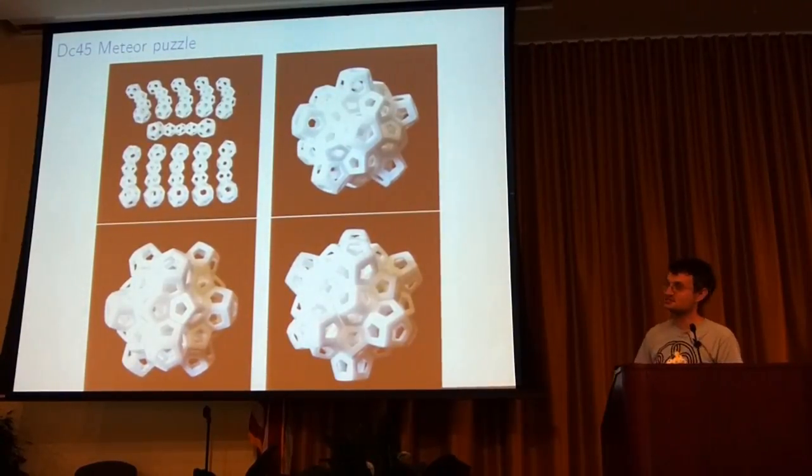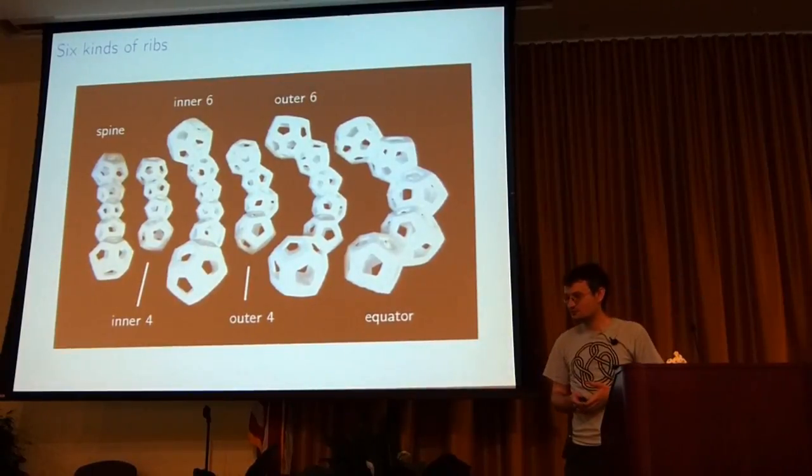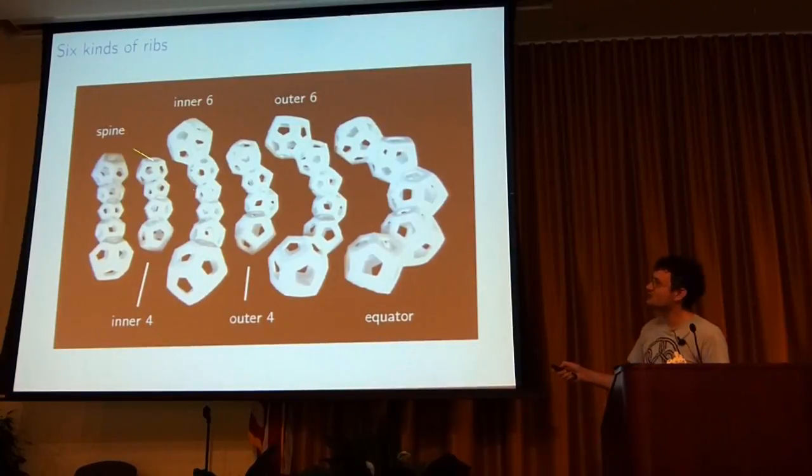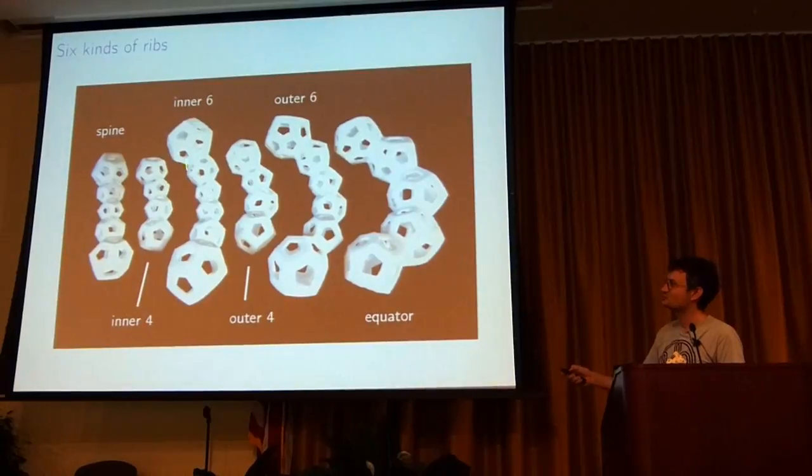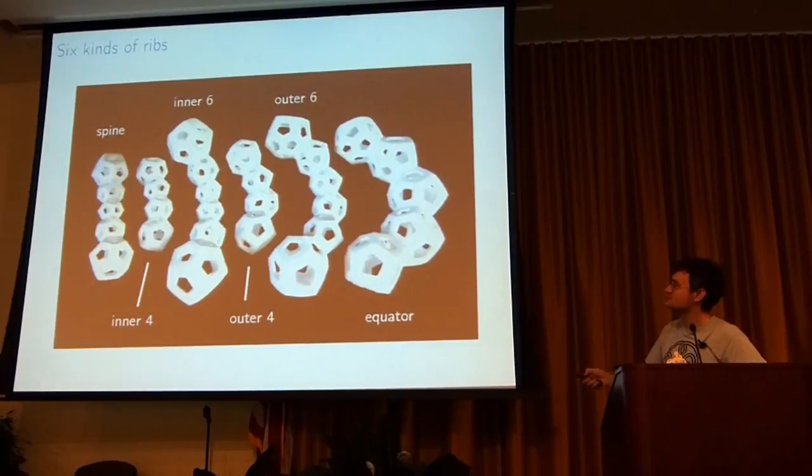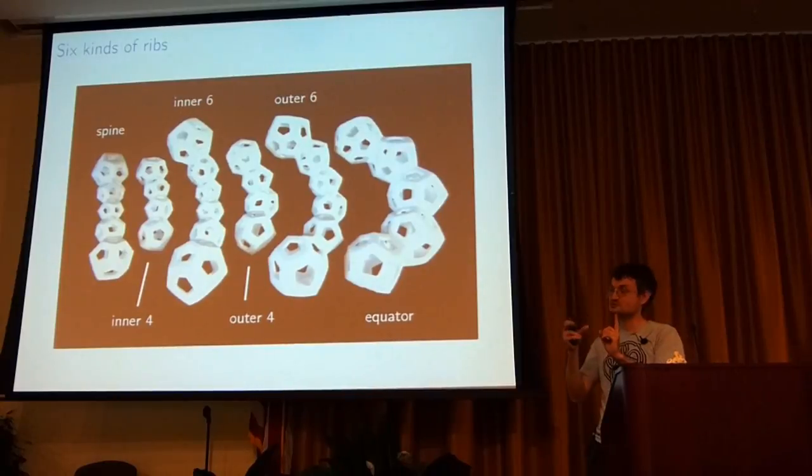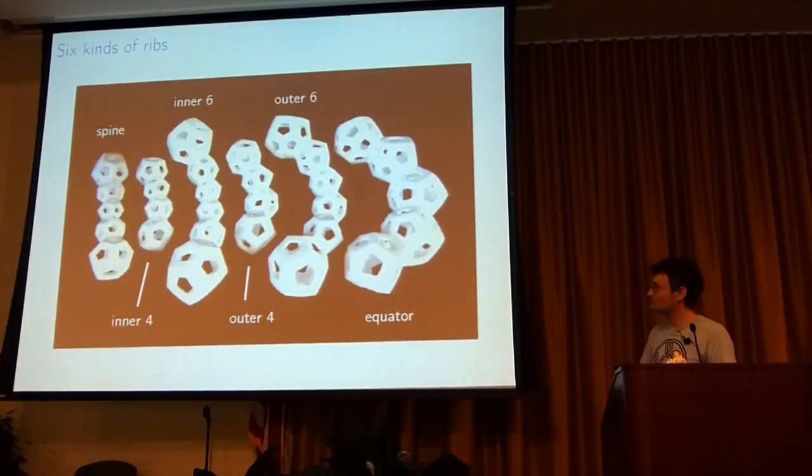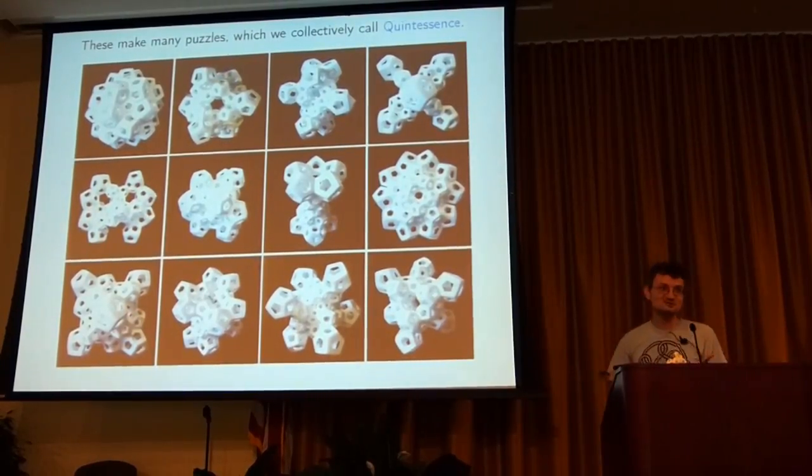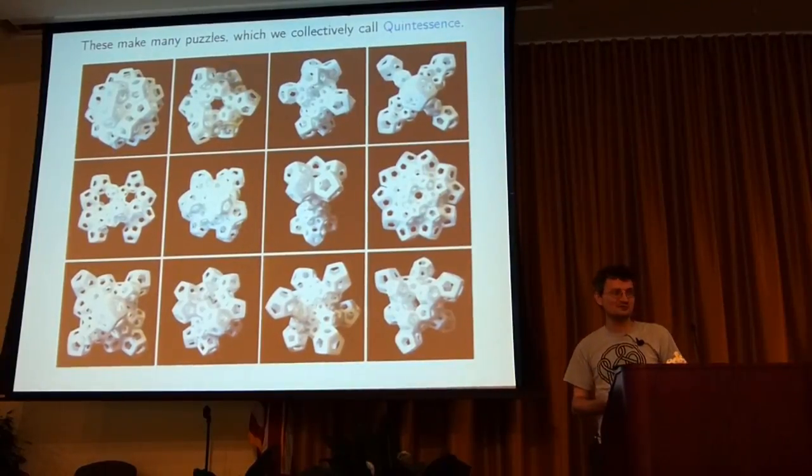Again, C is still the cell center projection, and now this time 45 dodecahedra. And so we settled on having six different kinds of rib. There's the spine, and then there's these two inner guys, which are the ones that wrap around the central spine, of two different lengths. The difference between the inner four and the inner six is just do we include the end dodecahedra, and then there's these two outer guys, that's an outer four and an outer six. Same thing again. And then the equator here goes around. So this is actually two of these, which fit together to make the central ring that we started with. And with these six pieces, you can make all kinds of things. There are enough different kinds of puzzles that we knew the name. We'd call them Quintessence.